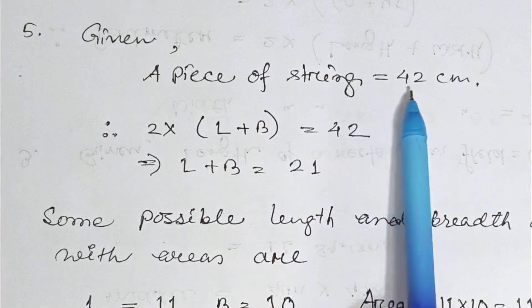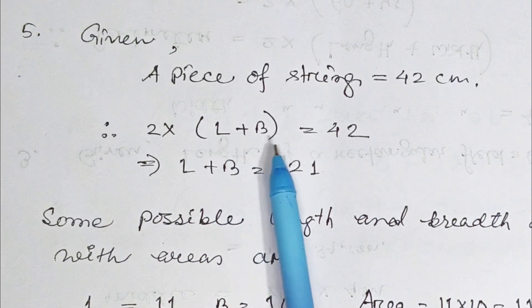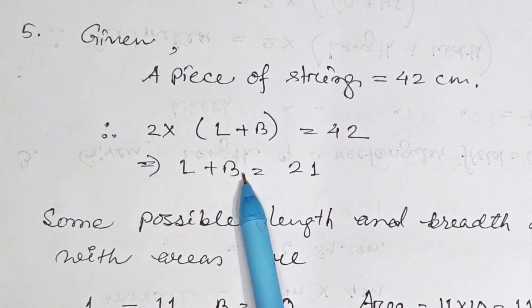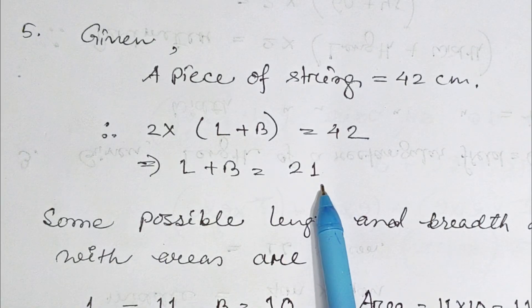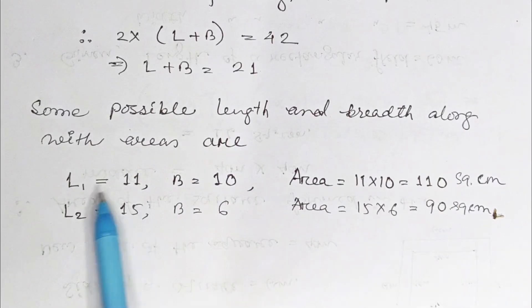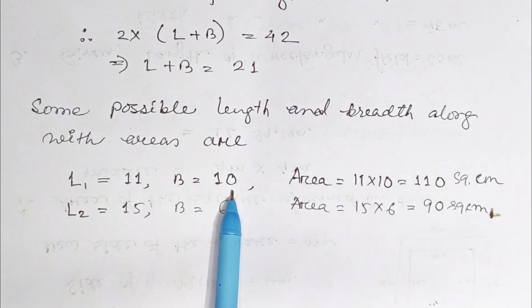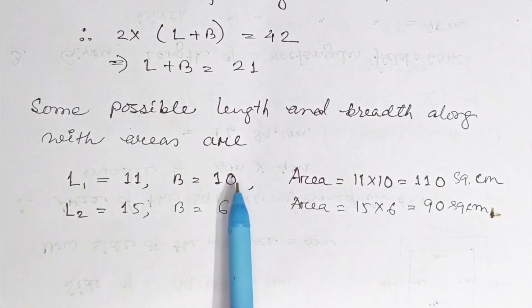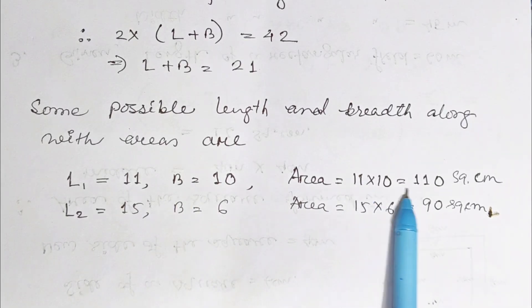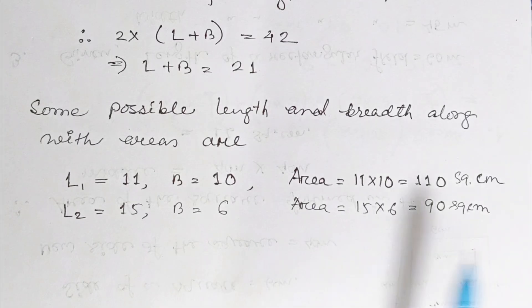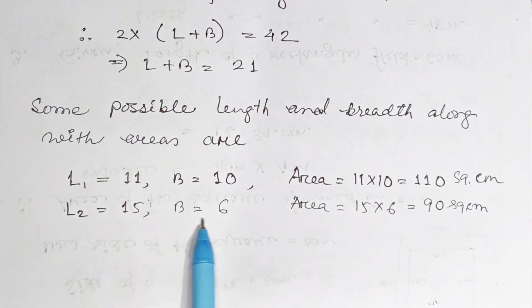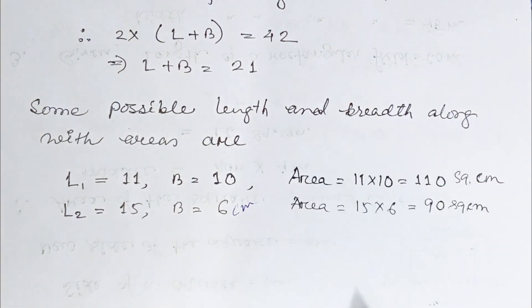Given a piece of string 42 cm, therefore 2 times length plus breadth equals 42. Some possible length and breadth along with areas: Length 1 equals 11, breadth equals 10, area equals 11 times 10 equals 110 square centimeter. Length 2 is 15 centimeter, breadth is 6 cm, area is 90 square centimeter.